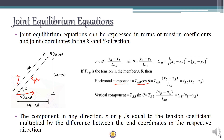Cos theta is nothing but the adjacent divided by the hypotenuse: (x_b minus x_a) divided by L_ab. Sin theta is the opposite over hypotenuse: (y_b minus y_a) divided by L_ab. Substituting these, the horizontal component becomes T_ab times (x_b minus x_a) divided by L_ab. Notice that T_ab divided by L_ab is nothing but the tension coefficient, so the horizontal component equals the tension coefficient multiplied by the difference in x-coordinates of the end joints.